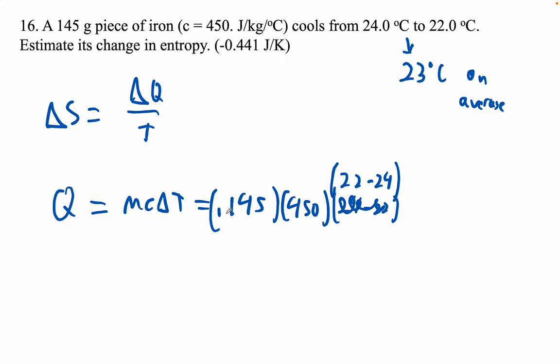Okay, so here we go. So we go 0.145 times 450 times negative 2. So our Q is negative 130.5, and then our change in entropy is going to be negative 130.5 joules divided